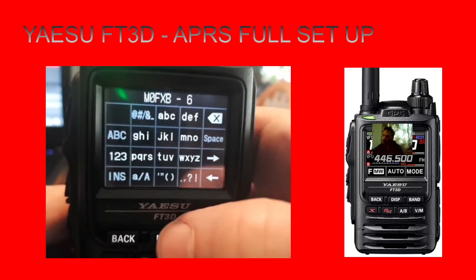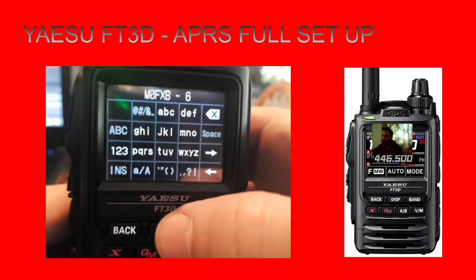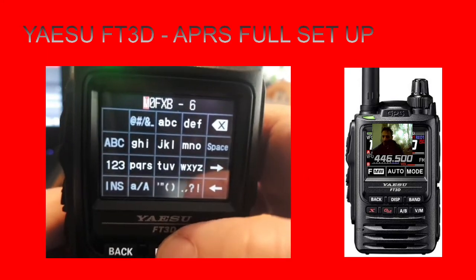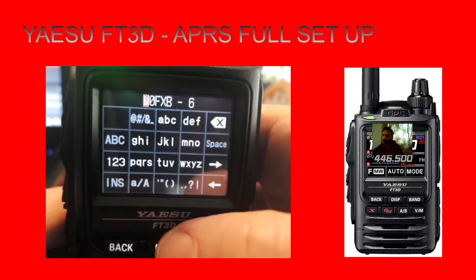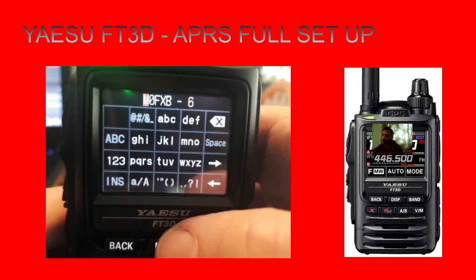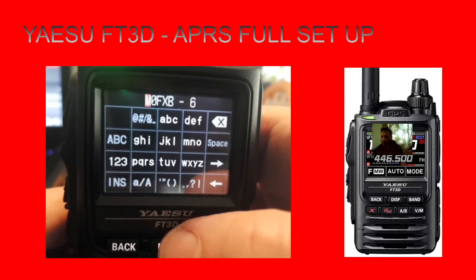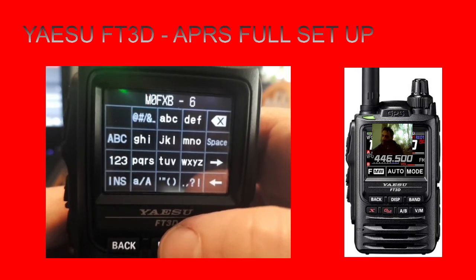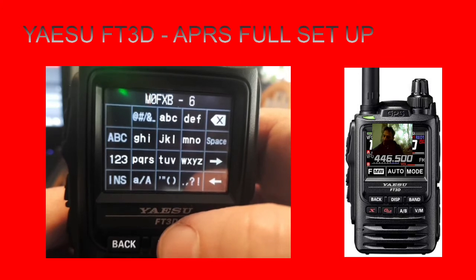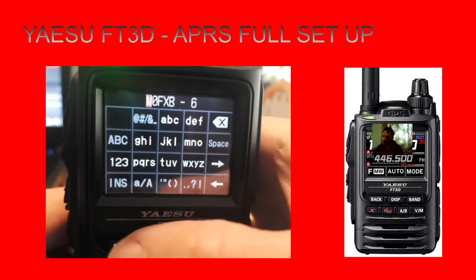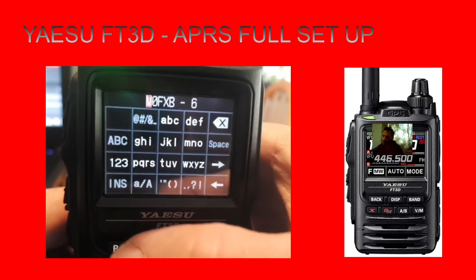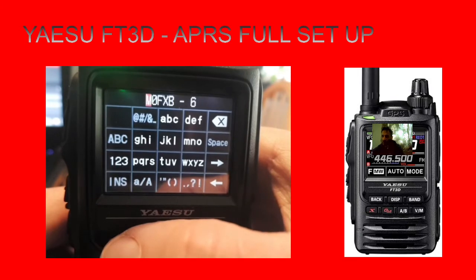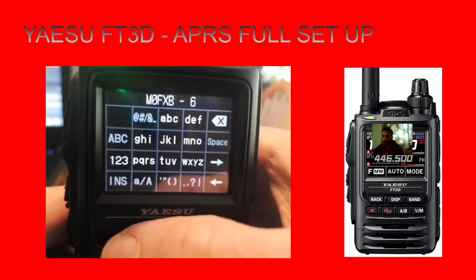Call sign is really important because without your call sign it's not going to work. Most people have a different SSID number for different activities - if they're going for a drive they might use a 5, and if they're going for a walk they might use a 3. It's a way of identification and you'll see it on APRS.fi.